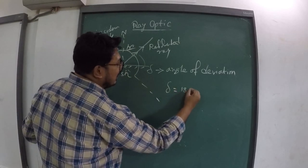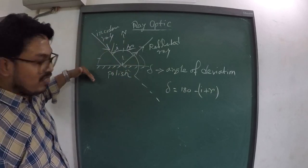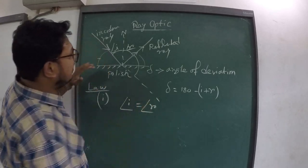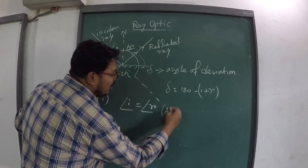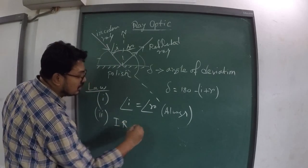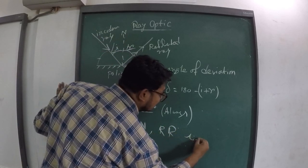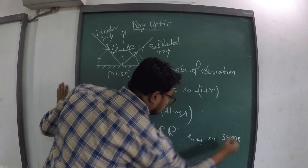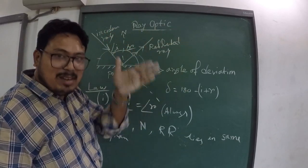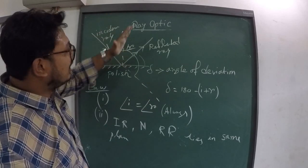That is reflection. There are laws of reflection. The first law, which we already know: the angle of incidence is always equal to the angle of reflection — always, for any type of reflection. The second law: the incident ray, the normal, and the reflected ray all lie in the same plane — the plane perpendicular to the surface.